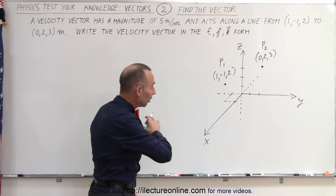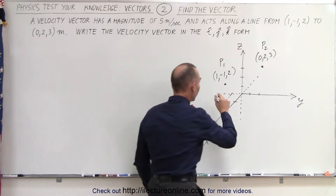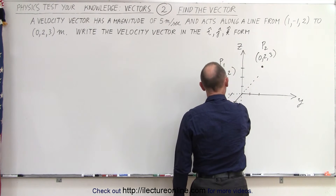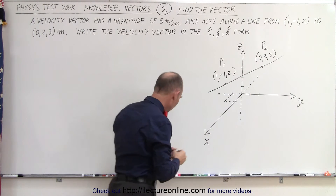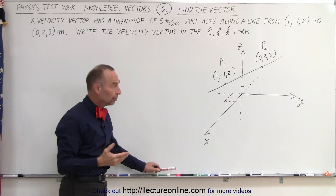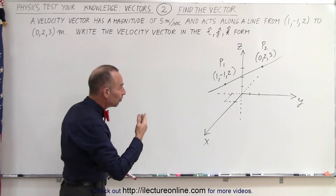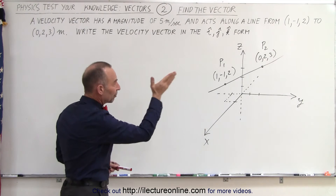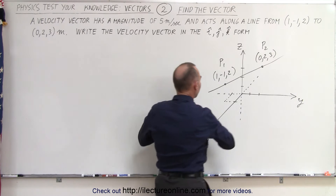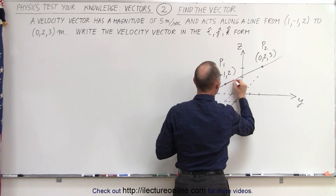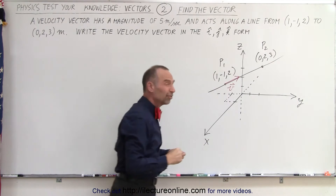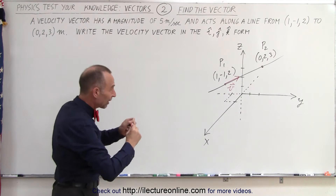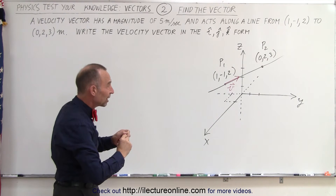Now let's draw a line between those two points — here's our line in three-dimensional space. We're looking for a vector that points in that direction from point one to point two. There's the vector we're looking for; let's call that the v vector. The question is, how do we go about finding that vector in the IJK format?